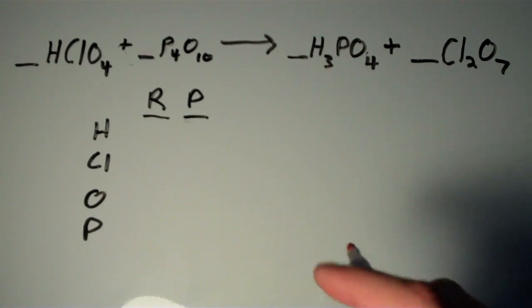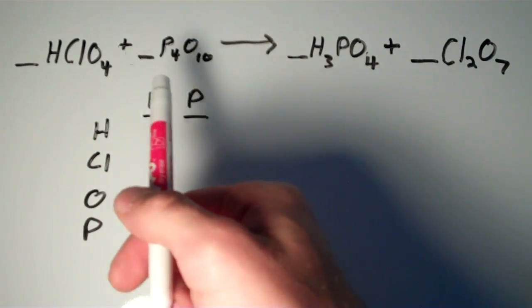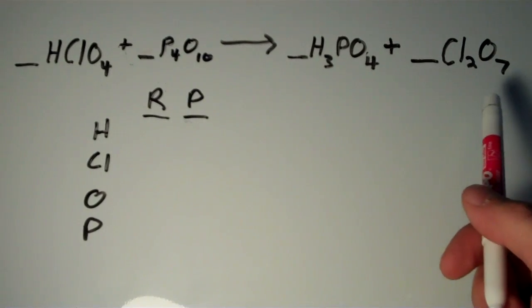Okay, in this video we are going to balance this equation here. HClO4 plus P4O10 yields H3PO4 plus Cl2O7.